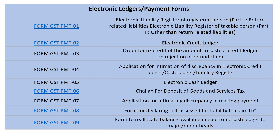GST PMT-03 is the order for re-credit of an amount to the cash or credit ledger. GST PMT-04 is the application for intimation of discrepancy in the electronic credit ledger, cash ledger, or liability register. GST PMT-05 is the electronic cash ledger — this is also important from an MCQ and competitive exam perspective.